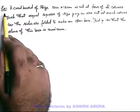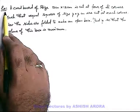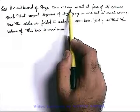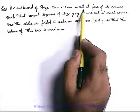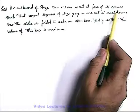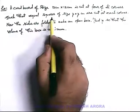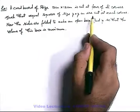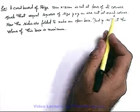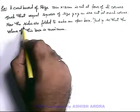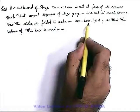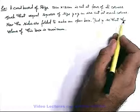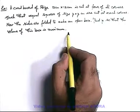Let's discuss another example. A cardboard of size 12 cm by 12 cm is cut at 4 of its corners such that equal squares of size y by y centimeters are cut at each corner. The sides are then folded to make an open box. We are required to find the value of y so that the volume of this box is maximum.